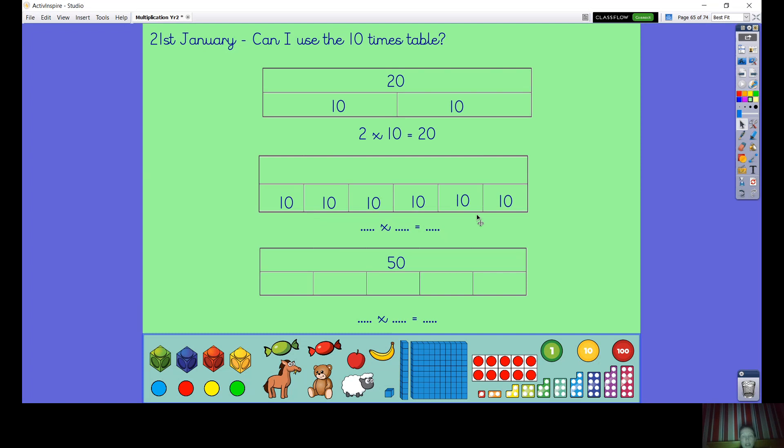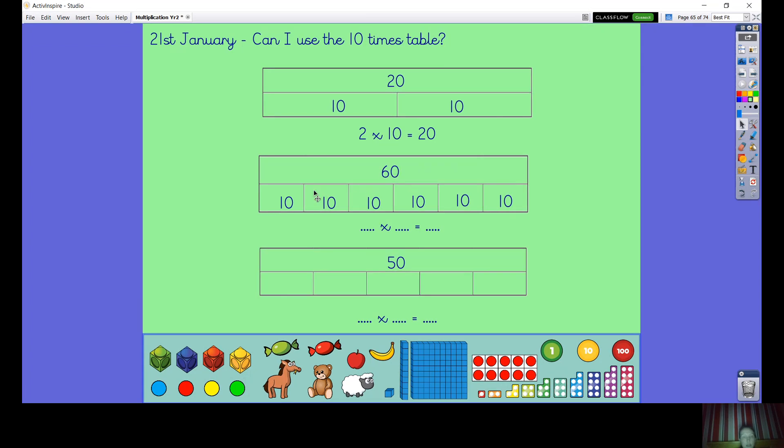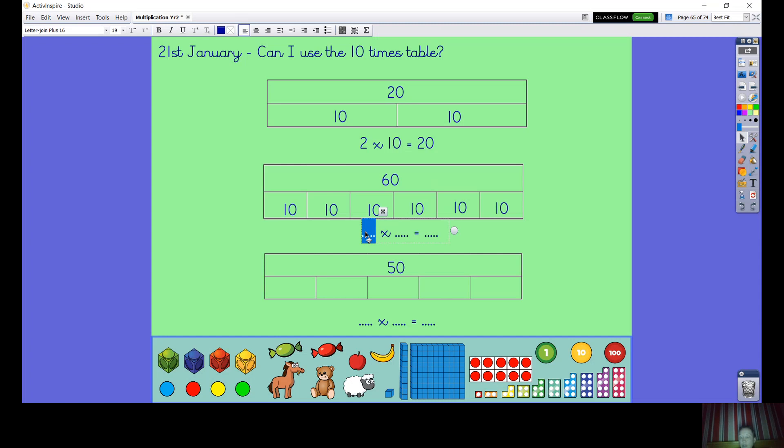Now you've had a go, let's have a look at this one. What are the clues? We've got 10s in each box. Let's fill this box in first. So how many 10s have we got? 1, 2, 3, 4, 5, 6. 6 tens are 60 if we count it in 10s. So we have got 6 groups of 10. We can write that down here. We say 6 groups of 10 or 6 times 10, and we've worked out the whole amount is 60.